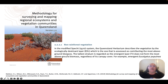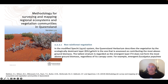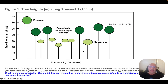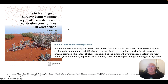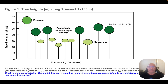In other words, the ecologically dominant layer is the most abundant. There might be trees that are actually taller than this dominant layer — the emergent trees — but we don't consider them the dominant layer because they don't contribute the most biomass.